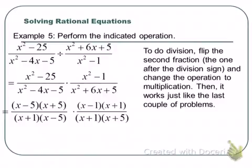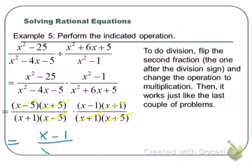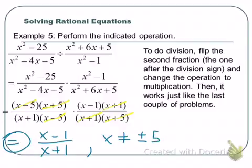Now it's cancel-fest. We can cancel the x minus 5s, the x plus 5s, and the x plus 1s. We're left with x minus 1 over x plus 1. We need to qualify this equal sign — the excluded values are x cannot equal plus or minus 5. We also canceled the x plus 1, but because we still have an x plus 1 in the answer, negative 1 ruins everything — so negative 1 doesn't have to be one of our excluded values. It's okay to include it, but you don't have to.